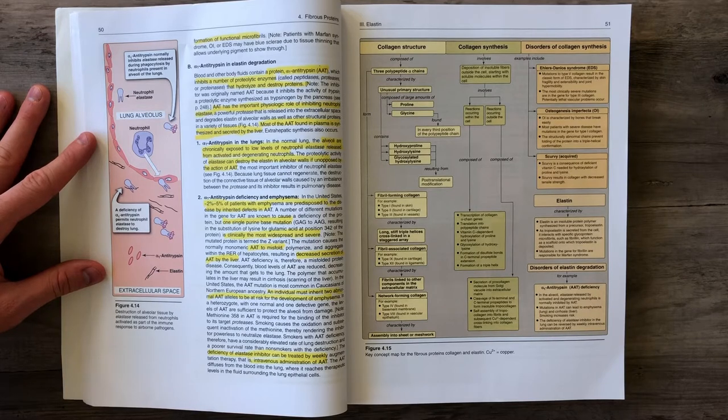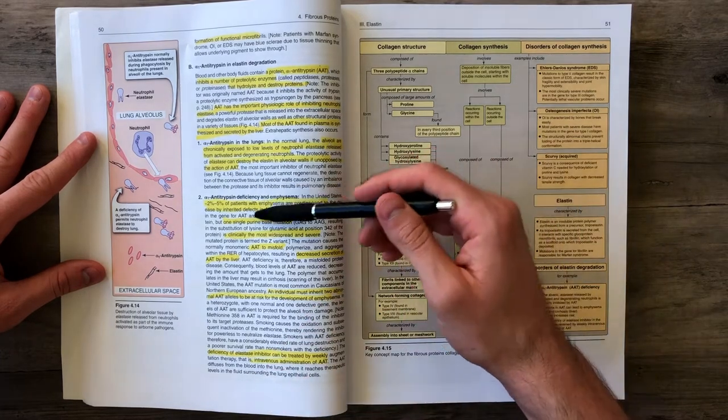If you have a disorder in your alpha-1 antitrypsin, you'll have increased breakdown of elastic tissue. That can predispose you to a pulmonary disease called emphysema.